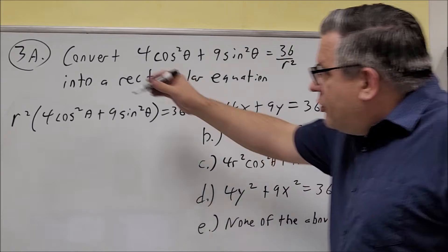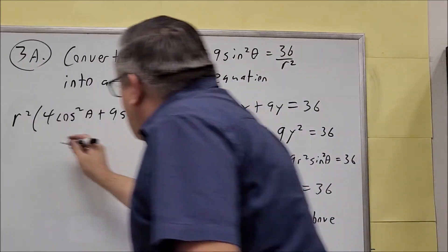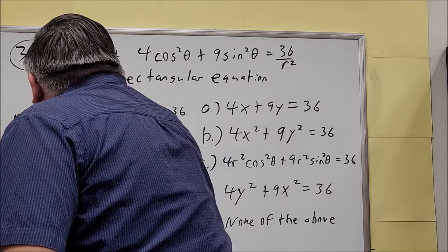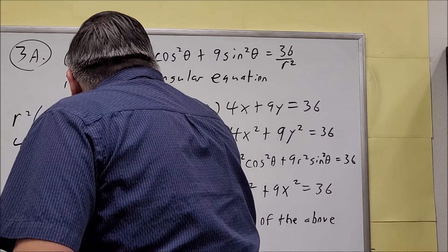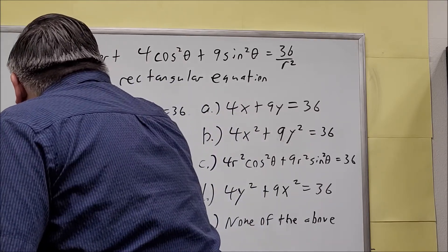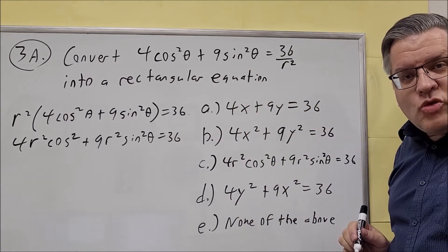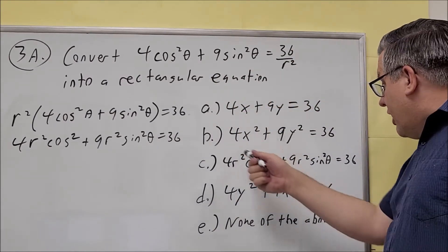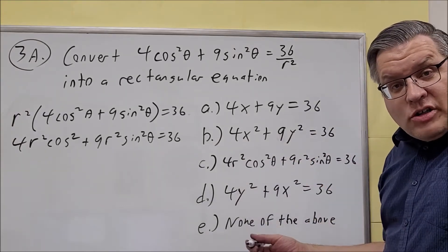Now what we're going to do is we're going to distribute r squared into each of these. So we're going to get 4r squared cosine squared theta plus 9r squared sine squared theta equals 36. Now if we take a look at our answer choices we notice that one of our answer choices is exactly that. So would that be our correct answer?